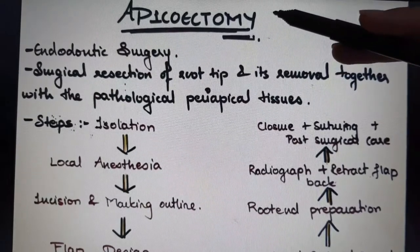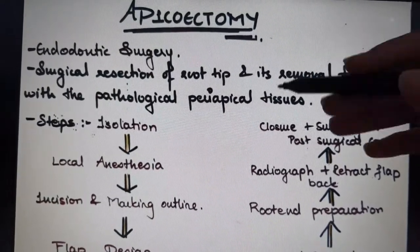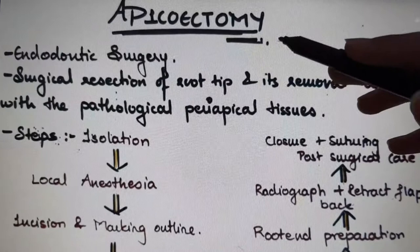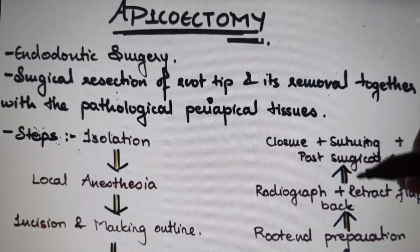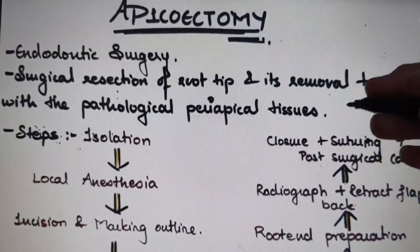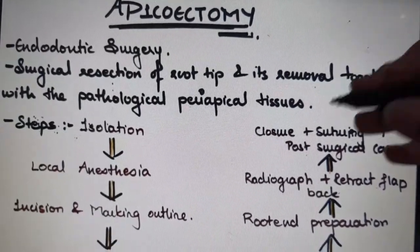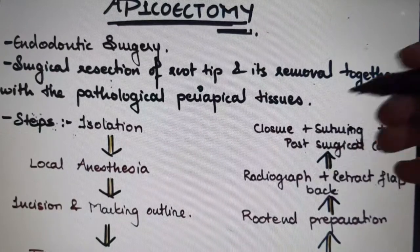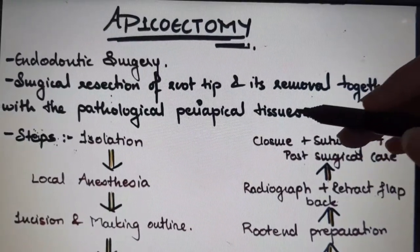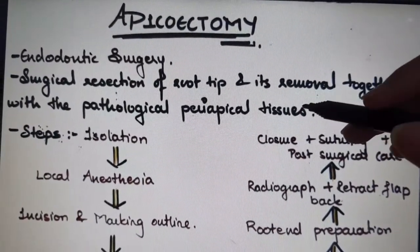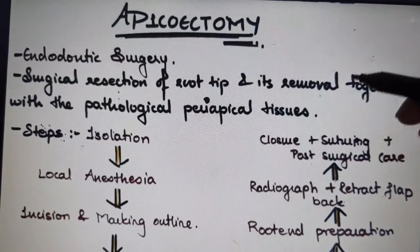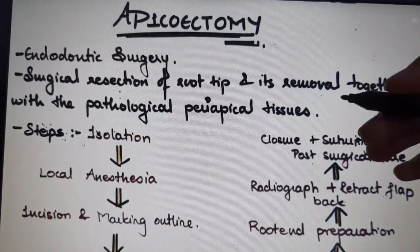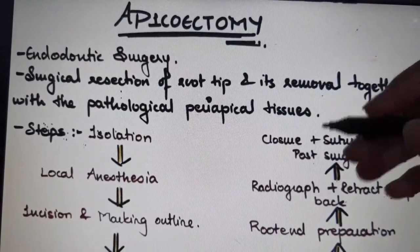This apexectomy procedure is done mostly in cases of failure of non-surgical endodontic treatment. Non-surgical treatment should be rendered at least twice before opting for surgery. Other cases include failure of previous surgery, anatomical problems, or iatrogenic errors during RCT treatment. It can be indicated in periodontal considerations or horizontal root fractures.